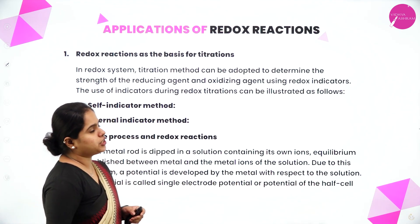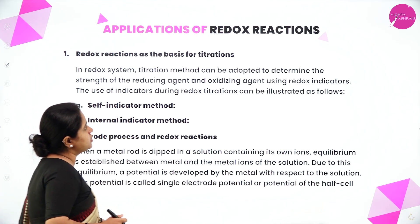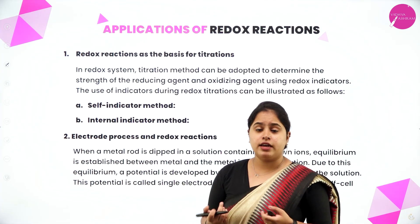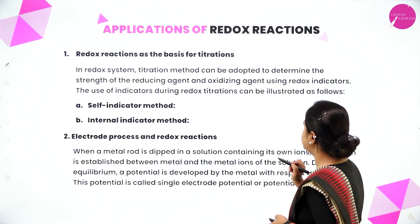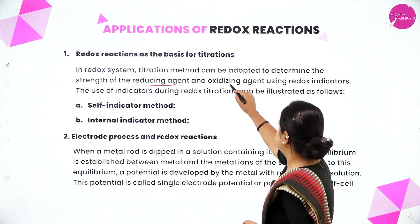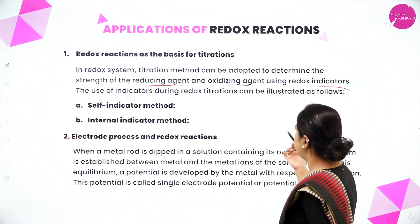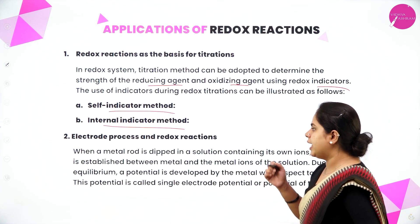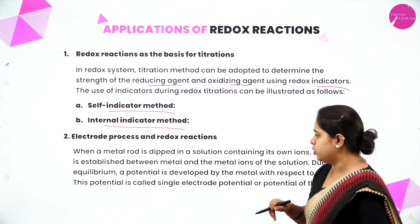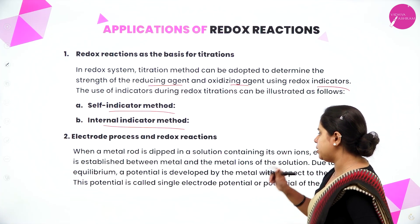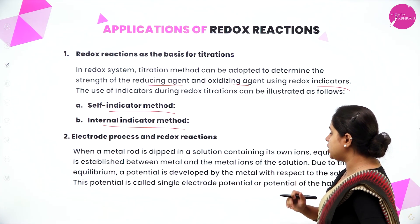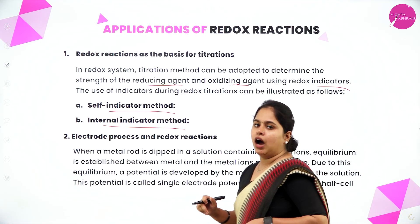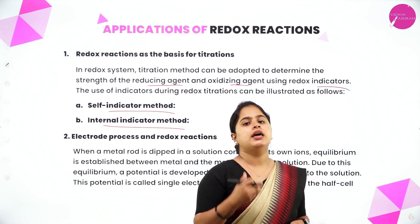Now moving on to the last part: applications of redox reactions. The first application is redox reactions as the basis for titrations. In your second year, you will be doing titrations based on redox reactions. In a redox system, the titration method can be adopted to determine the strength of reducing agents and oxidizing agents using redox indicators. There is a self-indicator method as well as an internal indicator method. The next application is electrode processes in redox reactions.